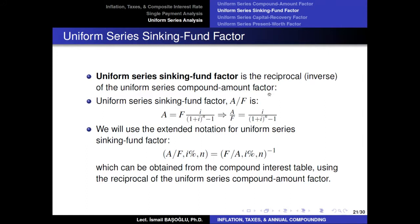In the previous video, we learned how to calculate the total accumulated future value in a savings account if we make a series of uniform deposits — how to calculate the future value of a uniform series of annual payments. But this time we are going to ask the opposite: if we would like to collect a total amount F in a savings account over N years under interest rate i, how much should we invest at the end of each year? This time we give the future value and ask for the annual installment size.